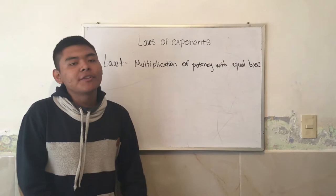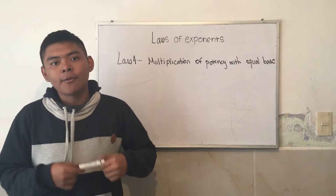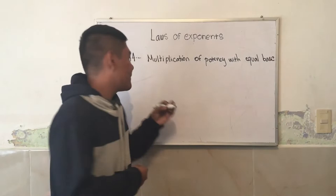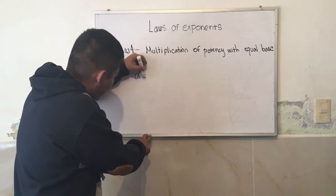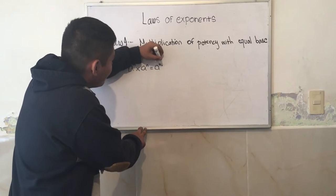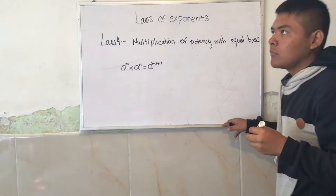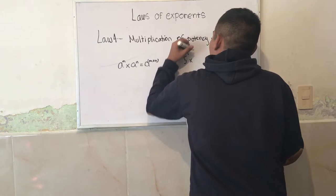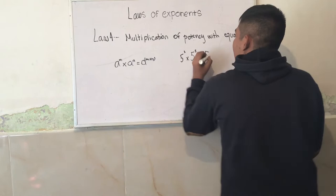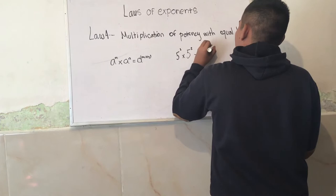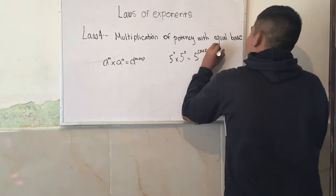Fourth law: multiplication of potencies with equal base. To multiply potencies where the bases are equal and different from 0, the base is maintained and the exponents are added. This is A to the M times A to the N is equal to A to the M plus N. For example, we have 5 to the 3 times 5 to the 2 is equal to 5 to the 5.